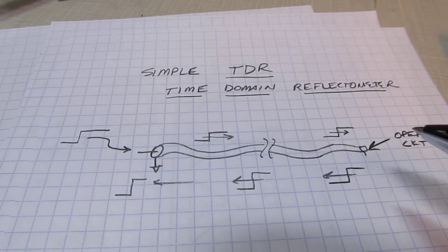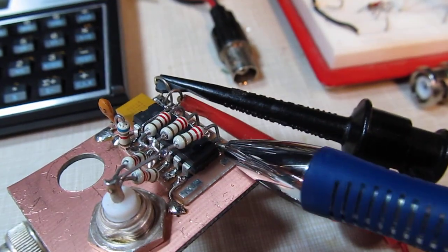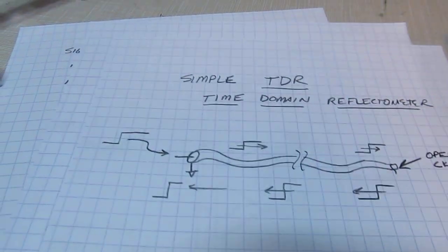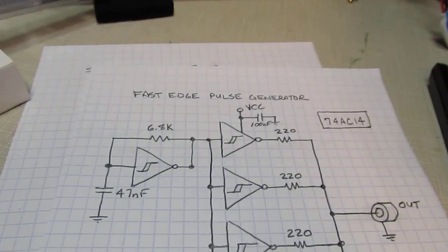Rather than spend a lot of money on a more expensive signal generator with fast edges, here's one you can build for about a dollar with some junk box parts. You might only have to buy the little inverter to give you some nice fast edges.